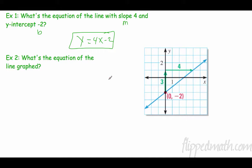Alright, two easy ones to start with. What's the equation of a line with slope 4? That's our m, and y-intercept negative 2. So y equals 4x minus 2. Alright, what's the equation of the line graph? Let's see, what's our slope? Up 3 over 4, so that's 3 over 4x. What's our intercept? Negative 2, so minus 2. Alright, those two are just easy. Alright, no problems whatsoever.